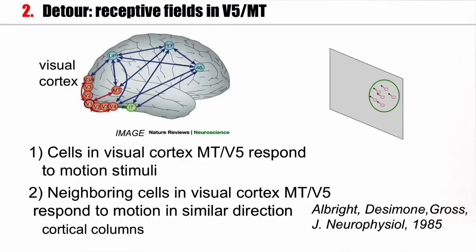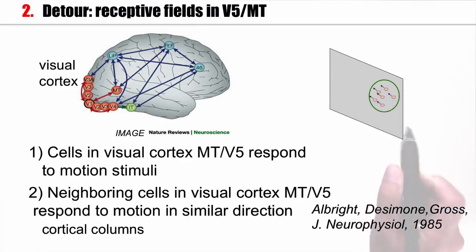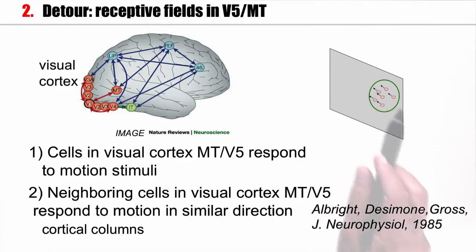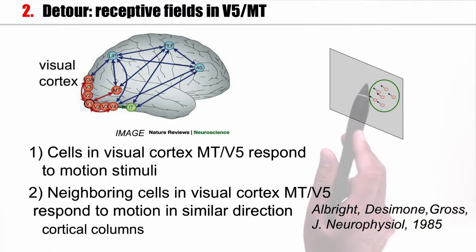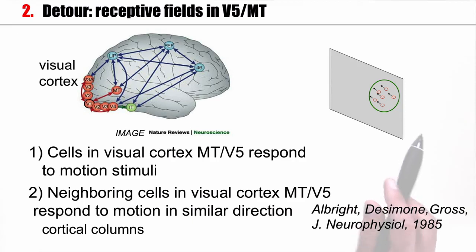Decision-making involves many different areas. In experiments with monkeys, you can ask whether they would vote left or right. They do this by moving their eyes, by performing a saccade. One of the standard stimuli used is not the bisection task, but a moving dot task. A random configuration of dots is presented on the screen and these dots move coherently in one direction or the other. If they move left, the monkey has to say left; if they move right, the monkey has to say right, by shifting his direction of gaze.